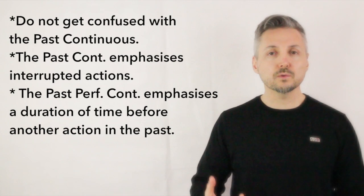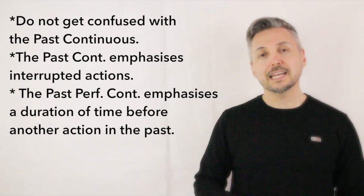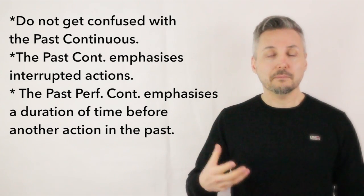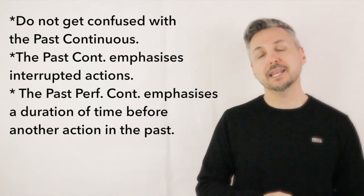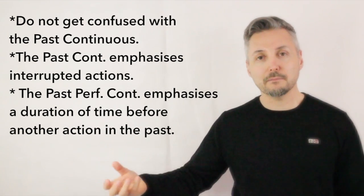Past continuous lo si usa per delle azioni interrotte nel passato. E invece il past perfect continuous lo si usa per enfatizzare la durata di tempo prima di un'azione nel passato.